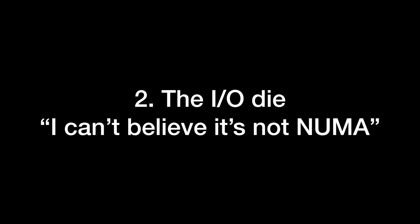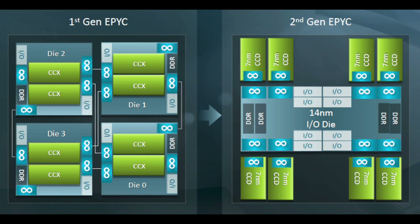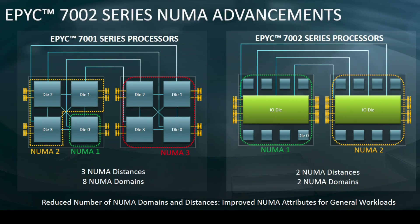The second gotcha in Zen that I want to complain about is the server IO die. Back in December 2018, AMD announced that Rome, the server version of Zen 2, moved all the IO onto a central IO die. This was surprising because it looks like a pretty huge change only two years after Zen 1. A major benefit AMD has been touting is that it eliminates the NUMA-within-a-socket complexity and performance penalty that existed in Zen 1. If all the memory controllers are on one IO die, then they're all the same distance from all the cores.